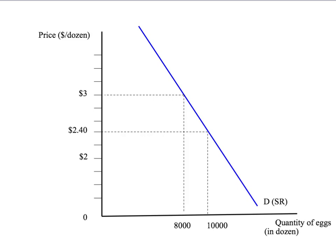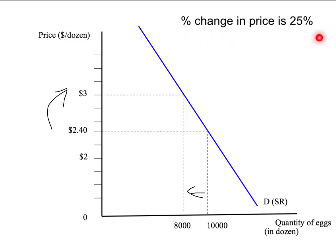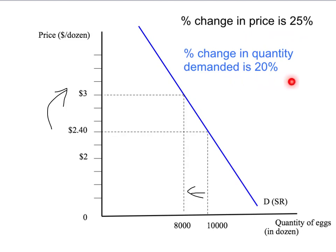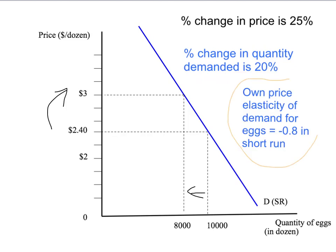So, let's suppose the price of eggs goes from $2.40 up to $3. And let's say that in the short-term, the immediate effect is a lessening of the amount that people would like to buy from 10,000 dozen eggs down to 8,000 dozen eggs. So, we've had a 25% increase in the price of eggs, and that's led to a 20% drop in the amount of eggs that are demanded. That gives us an own price elasticity of demand for eggs of 20 divided by 25 — which is negative, remember, because quantity is going down as price goes up — of negative 0.8. So our own price elasticity of demand for eggs is negative 0.8 in the short-run. It's inelastic.